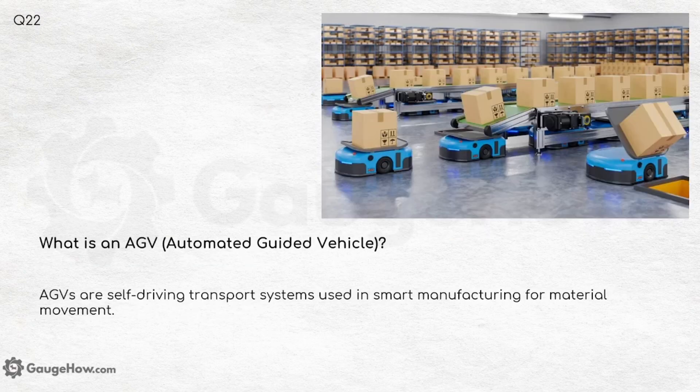What is an AGV — Automated Guided Vehicle? AGVs are self-driving transport systems used in smart manufacturing for material movement. In mechanical industries they are used for handling big packages or raw materials.